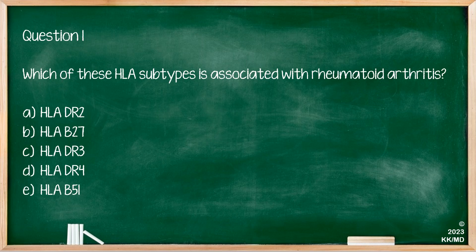Question one: which of these HLA subtypes is associated with rheumatoid arthritis? The options are HLA-DR2, B27, DR3, DR4, or B51. The correct answer is HLA-DR4. It's worth knowing what each of these HLA subtypes are associated with, particularly for the MRCP part one, as they do tend to come up quite frequently and it's worth committing to memory so that those questions can be done quickly in the exam.